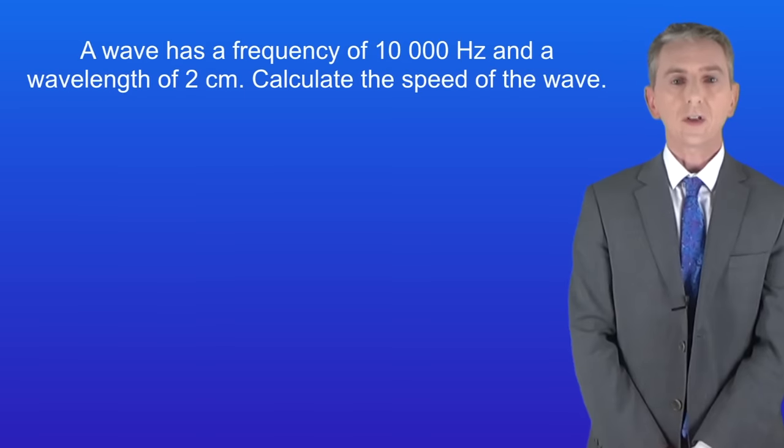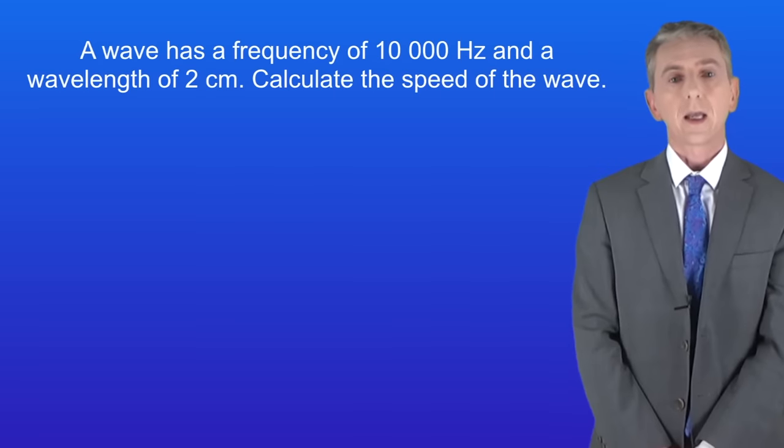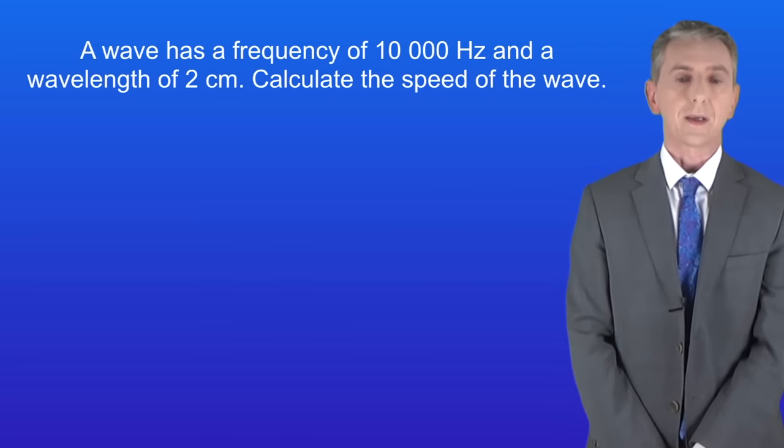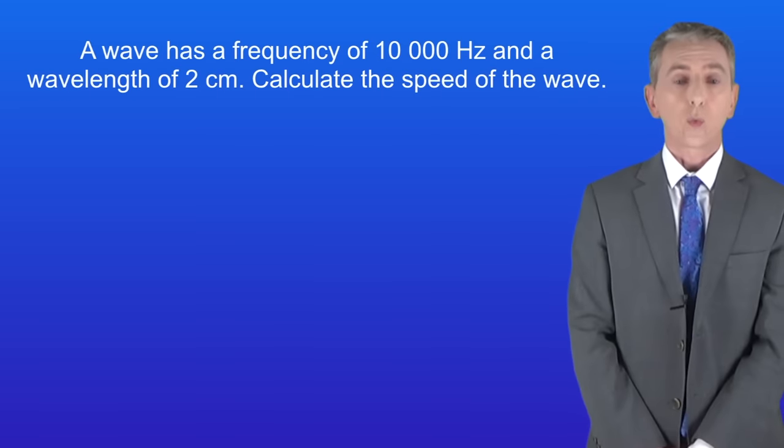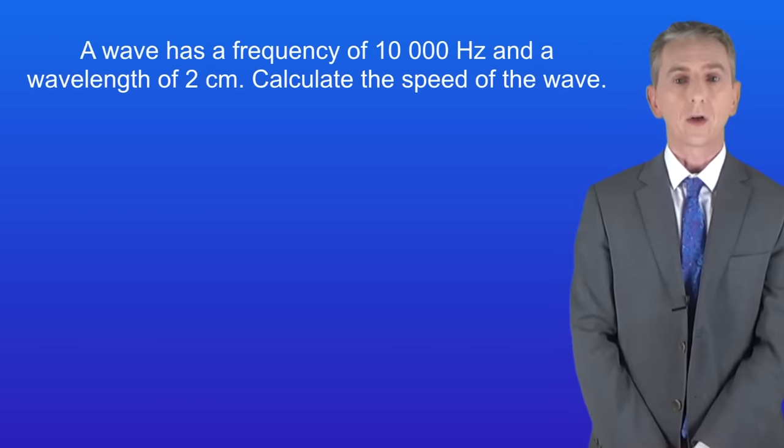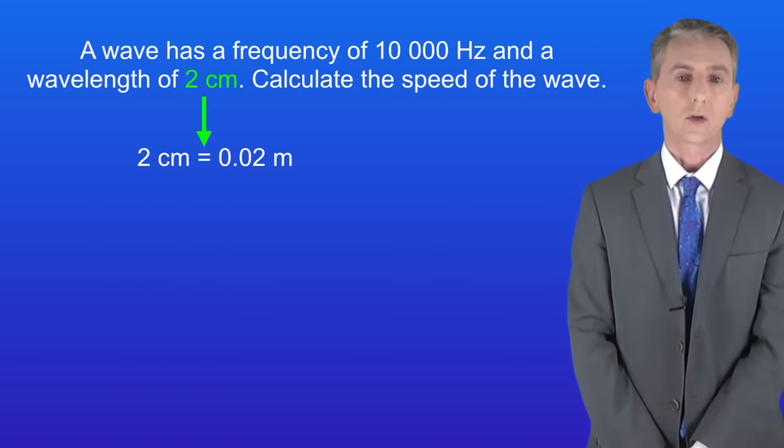Okay, so the question tells us that the frequency is 10,000 Hertz, and the wavelength is 2 centimeters. And again, we've got to calculate the wave speed. However, in this case there's a problem. Remember that the wavelength must be in meters. So first we've got to convert 2 centimeters into meters by dividing by 100. 2 centimeters is 0.02 meters.